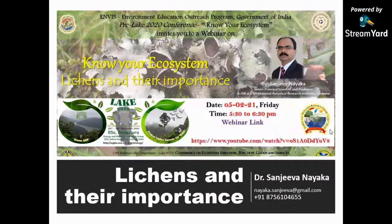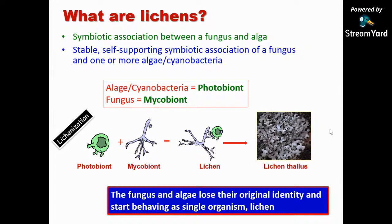I would like to keep my presentation to just one hour, not more than that. I would try to complete before that so we'll have sufficient time for discussion. By this time you all know what a lichen is — it's a symbiotic association between a fungus and an alga. But it's not as simple as that, because when a fungus and an alga make an association, they undergo lots of changes — morphological changes and physiological changes. They lose their individual identity and start behaving as a single entity, a single organism.